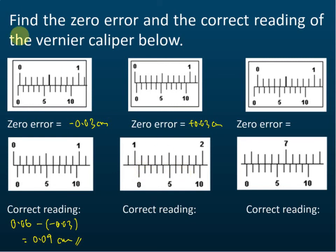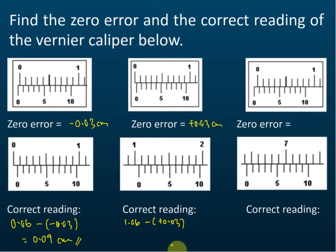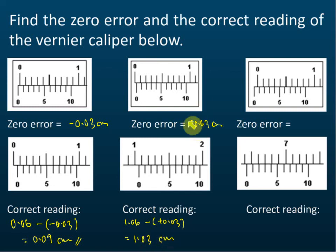The correct reading is 1.06 minus the zero error positive 0.03, so therefore the correct reading is 1.03 cm. We identify the zero error and then take the reading from the vernier scale minus the zero error — that's the final answer.